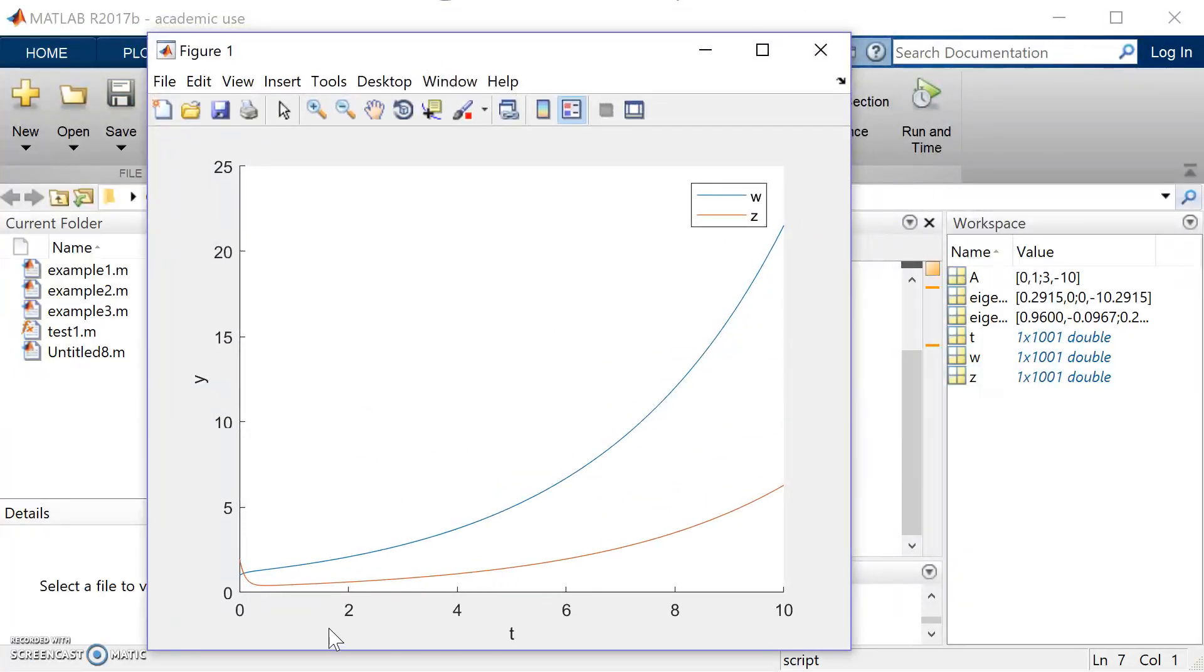All right, so T is on the horizontal axis, and I've called it Y on the vertical axis. That's technically the W and the Z outputs. So if we have a look at, we'll start with W, which is the blue line.